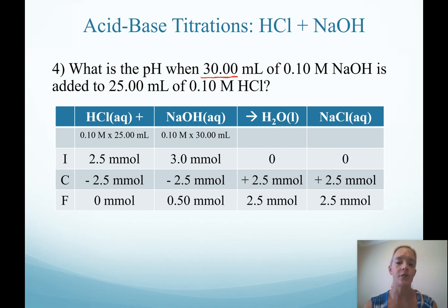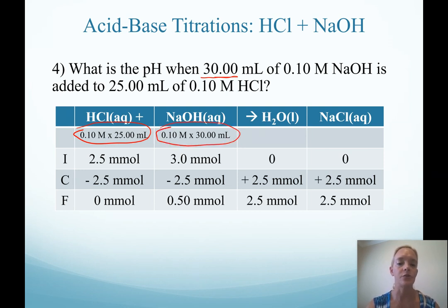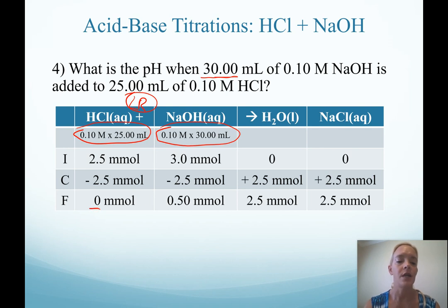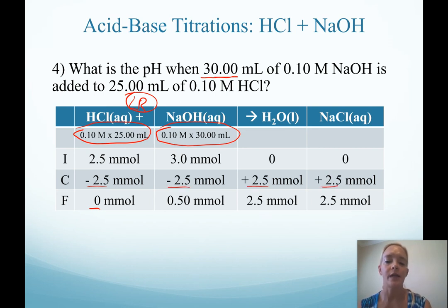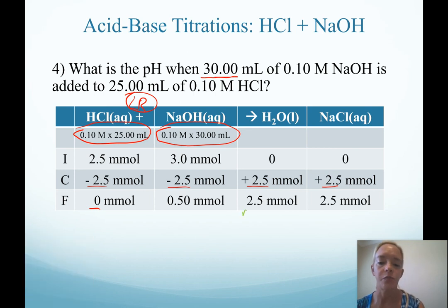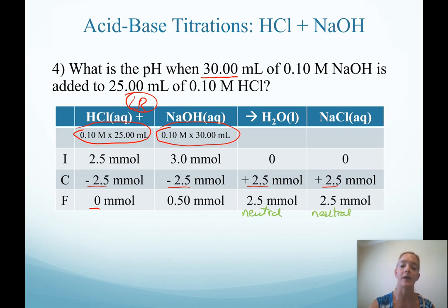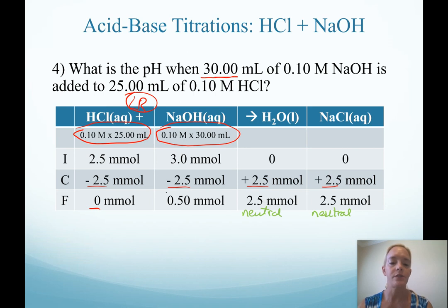If you can't tell where you are in the titration, a good place to start is with our change table, calculating the amount of each reactant to determine the limiting reactant. In this case, that is HCl — it will go to zero. The amount of change is 2.5 millimoles for each substance: minus 2.5 for the reactants and plus 2.5 for the products. Our products are neutral, and past the equivalence point we can't make any more product. Therefore, the pH of our solution is dictated solely by how much excess base we have in solution.